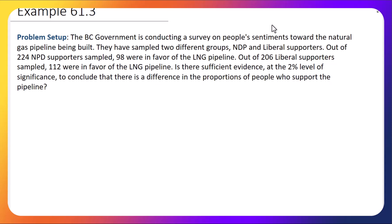In this video, I'm going to go through testing for differences in proportions between two groups. The example is the following: Two groups, the NDP and Liberal supporters, have been polled and asked whether they are in favor of the LNG natural gas pipeline. We have 98 out of 224 NDP supporters who responded yes, and 112 out of 206 Liberals who responded yes. The question is, is there sufficient evidence at the 2% level of significance to conclude there is a difference in the proportions of people who support the pipeline between these two groups?